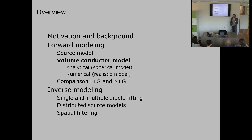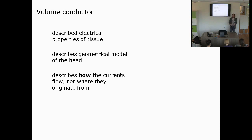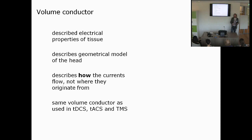Besides the sources, we also need a volume conductor. For the volume conduction model we have different options: analytical or numerical solutions. The volume conduction model describes the electrical properties and geometry of the tissue — how the currents flow, but not where they originate. The currents originate from the sources, and the volume conduction model is basically a passive conductive device. We can use the same volume conduction modeling for EEG and MEG as for transcranial direct current stimulation, transcranial alternating current stimulation, or magnetic stimulation, where the currents are produced by an external stimulator.